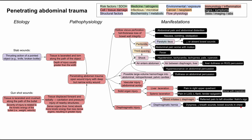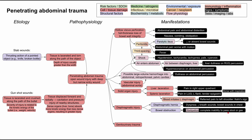You can even hear bowel sounds in the chest if the bowels are where the lungs should be due to a diaphragmatic hernia. In addition, you can have bowel obstruction — when the bowel passes through the defect in the diaphragm, it may be squeezed too tightly and become obstructed. This can cause obstipation, which is complete inability to pass stool or gas. Next is genitourinary trauma, which can present as blood at the urethral meatus or hematuria — either gross or microscopic.